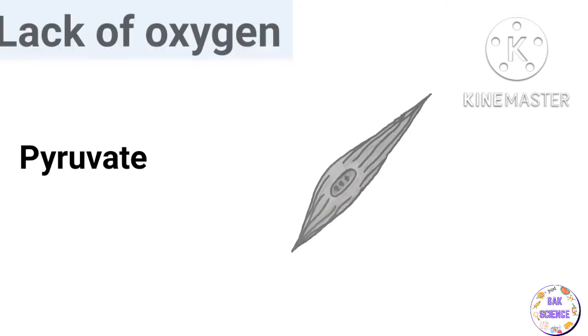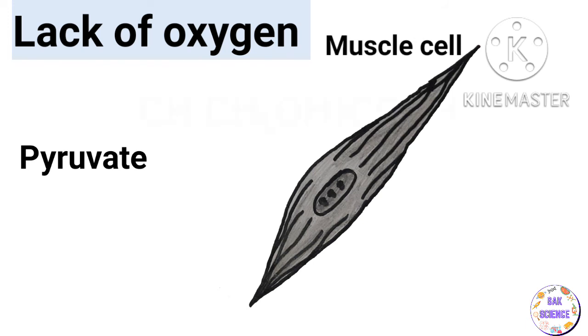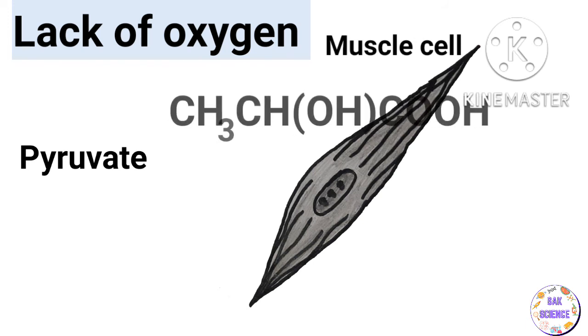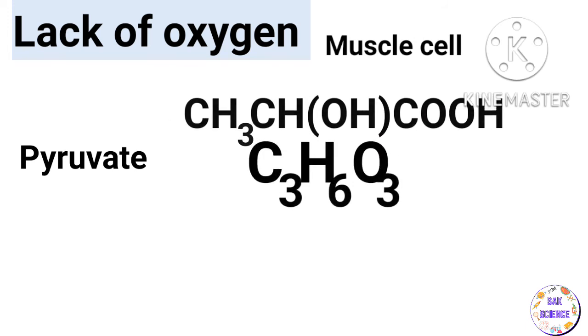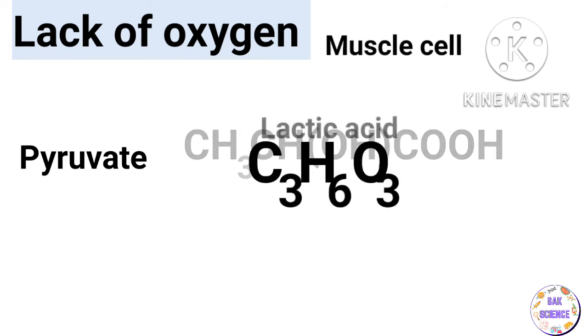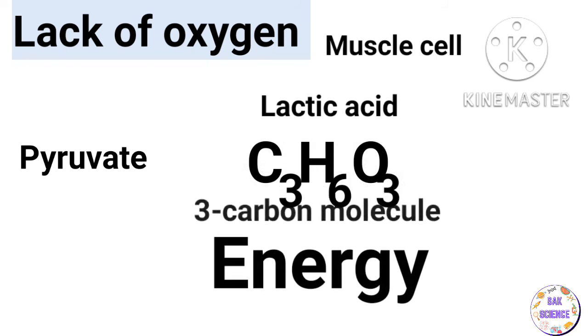Pyruvate in our muscle cells, during lack of oxygen, is converted into lactic acid, and energy is also released.